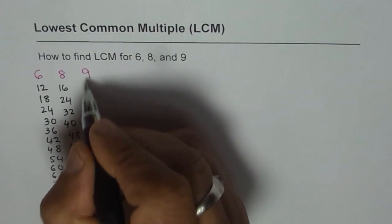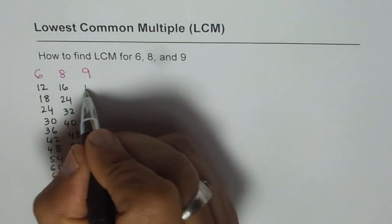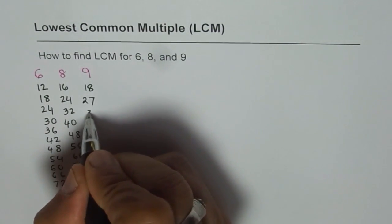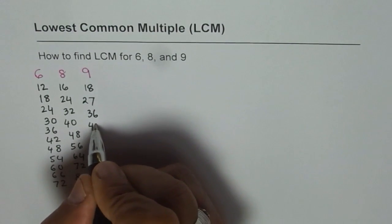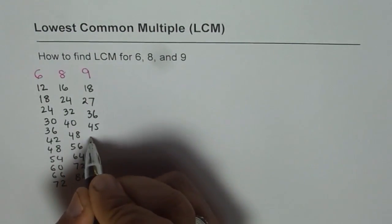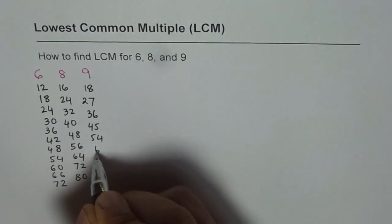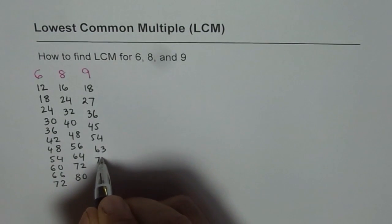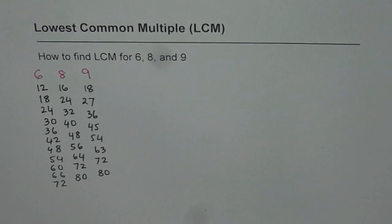How about 9's? 9 times 1 is 9, 9 times 2 is 18, 27, 36, 45, 54, 63, 72, 80 and so on.